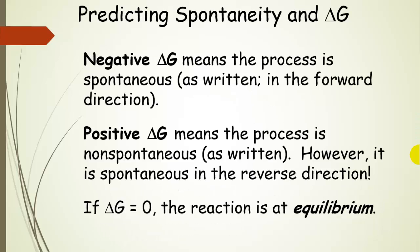A negative delta G means the process is spontaneous — get that firmly in your head. A positive delta G means that it's not spontaneous in the forward direction, but it is spontaneous in the reverse direction; if the reaction runs in the opposite direction, then it would be spontaneous. If delta G is equal to zero, then the reaction is at equilibrium. The change in free energy for the system at equilibrium is always zero.